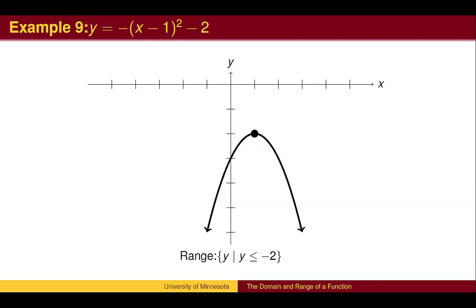Here is an example where the parabola has been flipped top to bottom, then shifted 1 right and 2 down. In this case, the vertex has a y value of -2, and the parabola goes downward from there. The range is all y values less than or equal to -2.